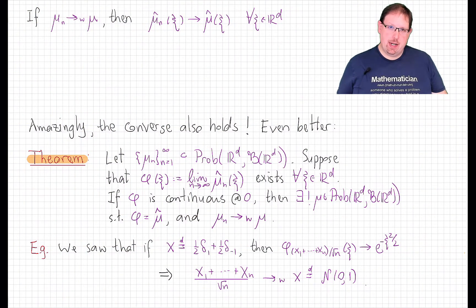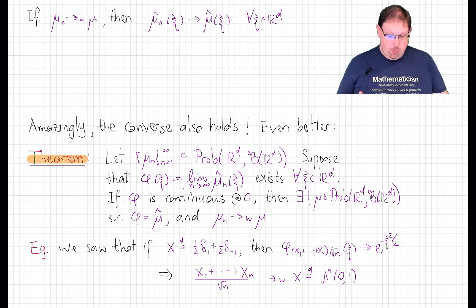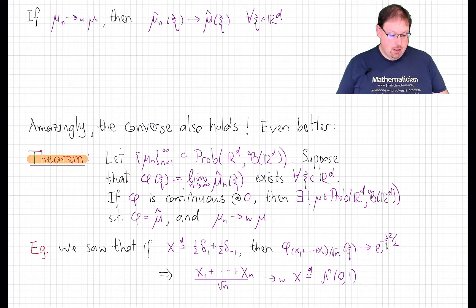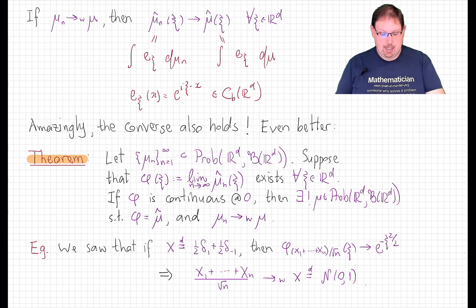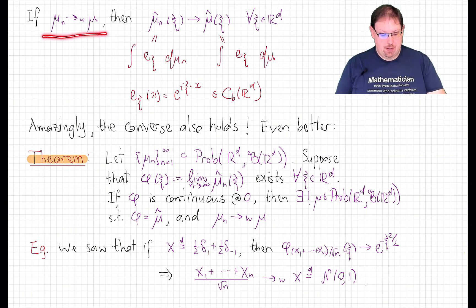In this lecture, we're going to explore the relationship between the characteristic function and weak convergence. If μn is a sequence of probability measures on the real line converging weakly to a measure μ, then the Fourier transform of μn converges pointwise to the Fourier transform of μ. The reason is that the Fourier transform is defined to be the integral of the measure against a continuous bounded test function, e^{xi}. And therefore, by the very definition of weak convergence, we get this pointwise convergence.